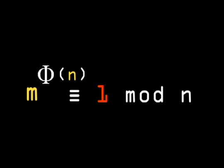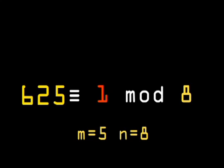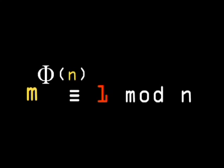This means you could pick any two numbers such that they do not share a common factor. Let's call them m and n. Say m equals 5 and n equals 8. Now, when you raise m to the power of phi n, or 4, and divide by n, you will always be left with 1.